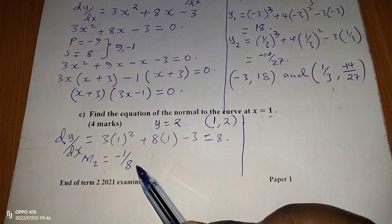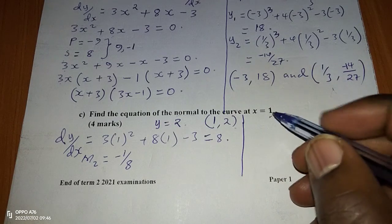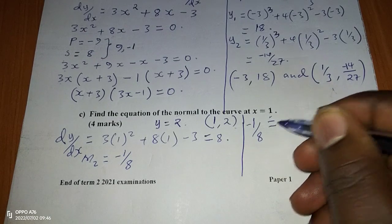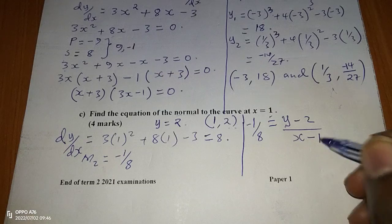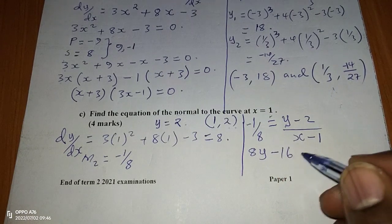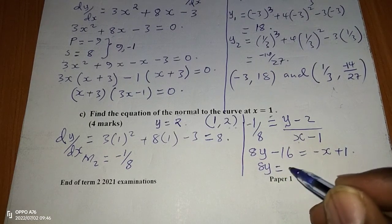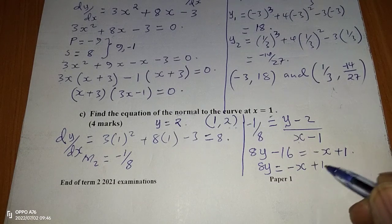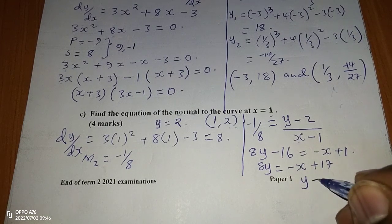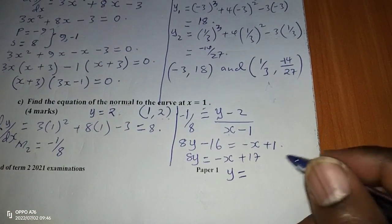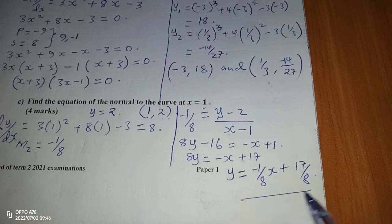Using the gradient of the normal, negative 1 over 8, and the point 1, 2, we form the equation: negative 1 over 8 equals y minus 2 over x minus 1. Cross-multiplying gives 8y minus 16 equals negative x plus 1, so 8y equals negative x plus 17. Dividing through by 8, the equation of the normal is y equals negative one-eighth x plus 17 over 8.